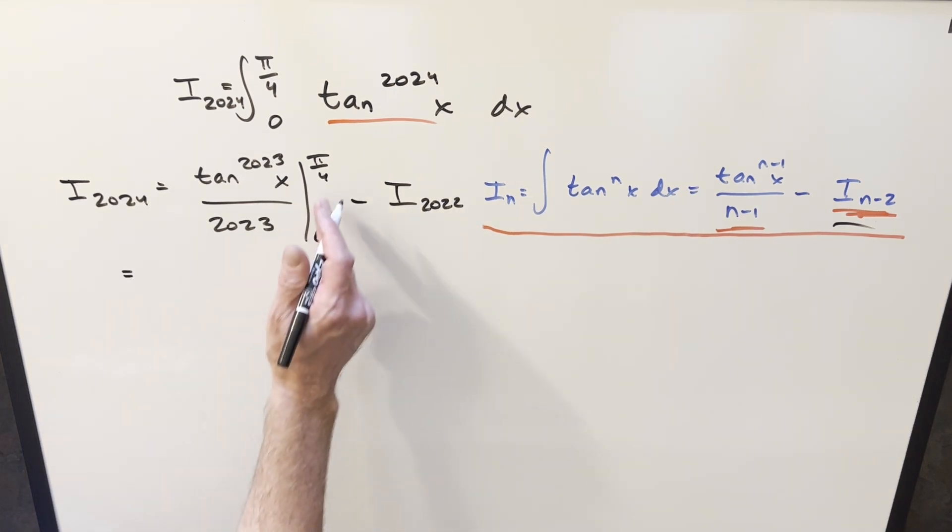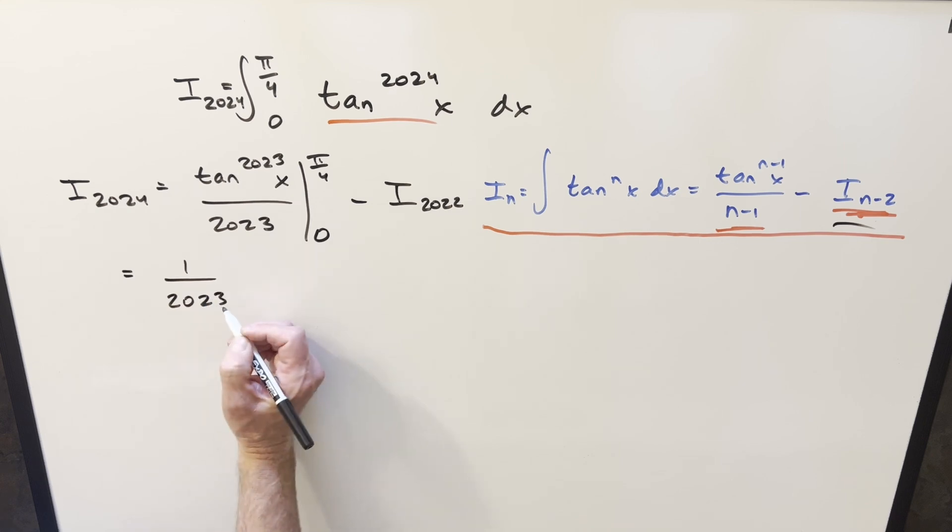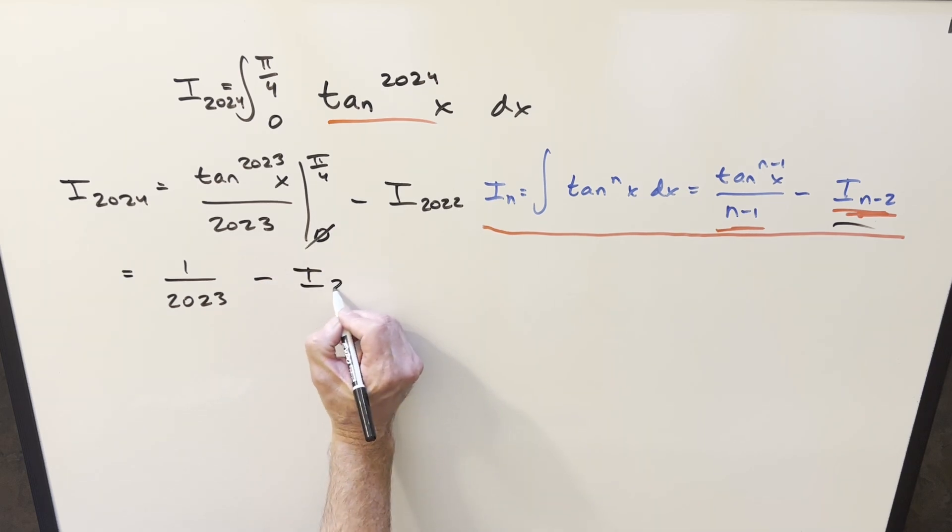Well, then we can go ahead and evaluate this. Tan at pi over 4 is just 1. 1 to the 2023 is just 1. So this first piece is just going to be 1 over 2023. You plug 0 in, tan at 0 is just 0, so that part goes away. And then we just get back this I_2022.